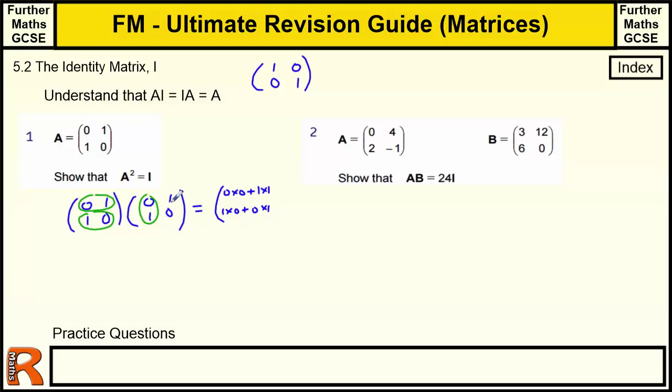So we've got 0 times 0, 1 times that. So we've got 0 times 1 and 1 times 0. So we've got 0 times 1 plus 1 times 0. It's going to be 0, but we'll come to that. Then we've got 1 times 1 plus 0 times 0.